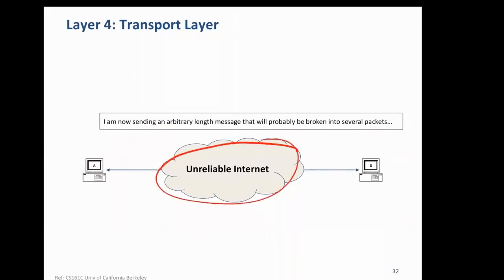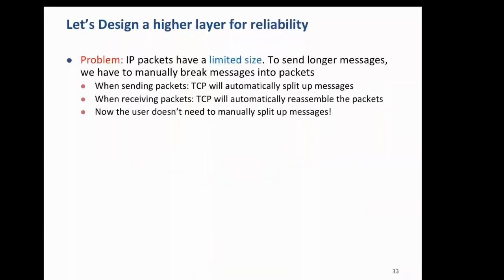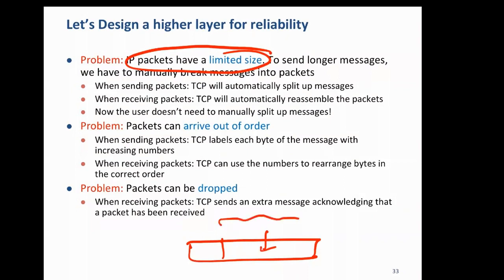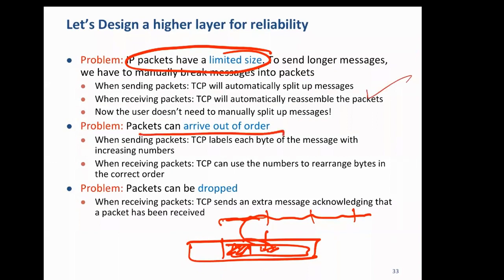Because IP packets have limited size but the application gives a stream of bits, TCP must split those bits into segments, put them into TCP payload, attach a header, and send over IP. When packets arrive out of order — because IP packets may take different routes — TCP has to somehow reassemble them back.